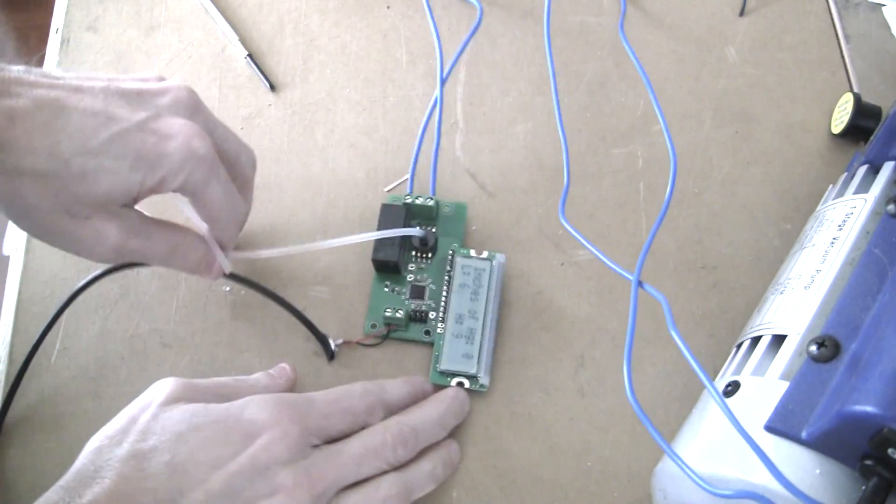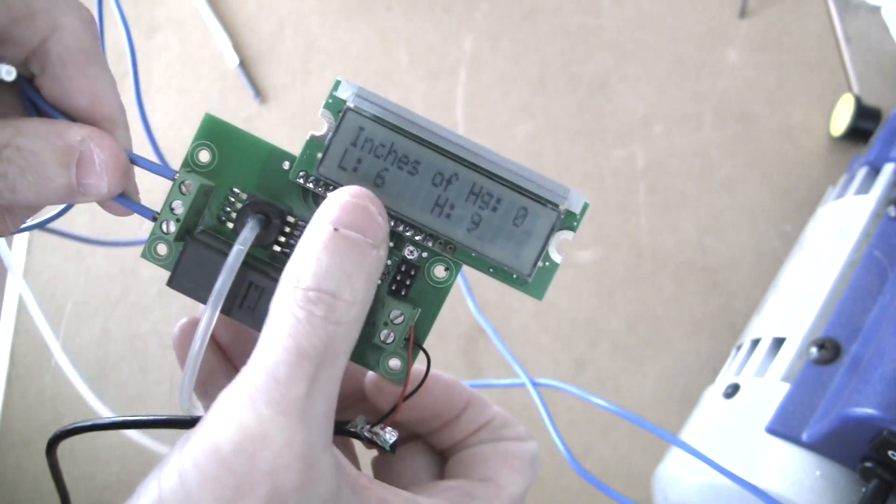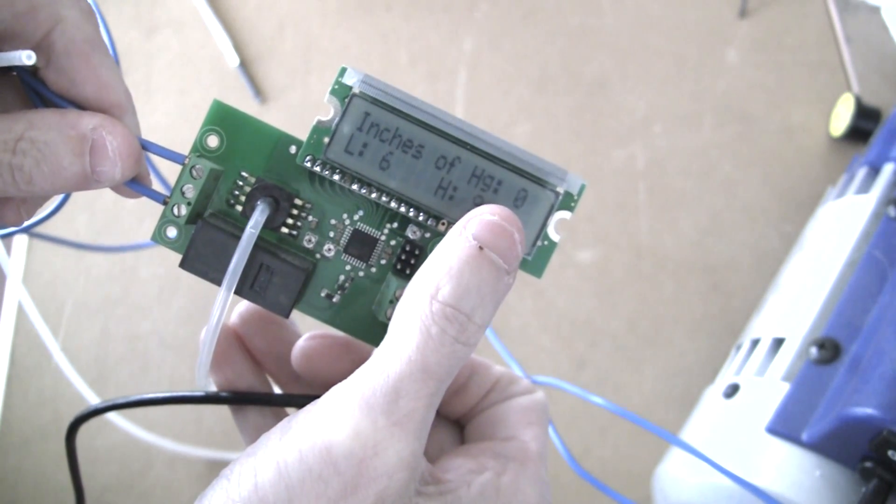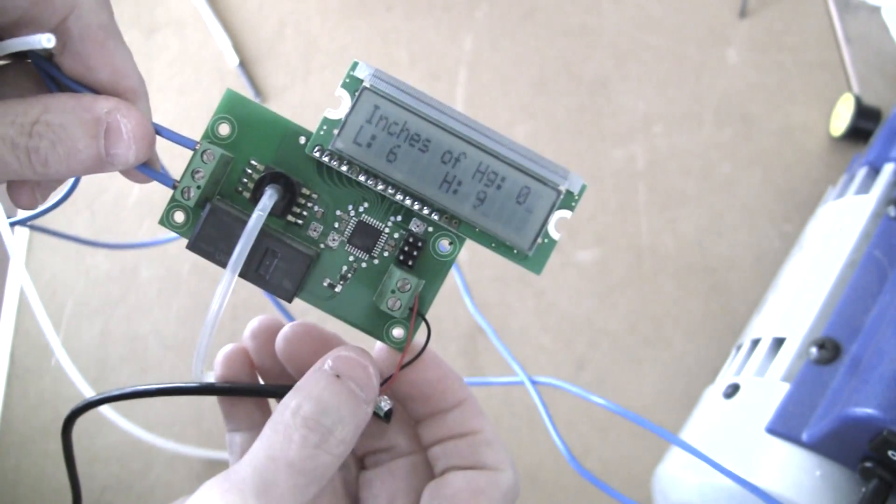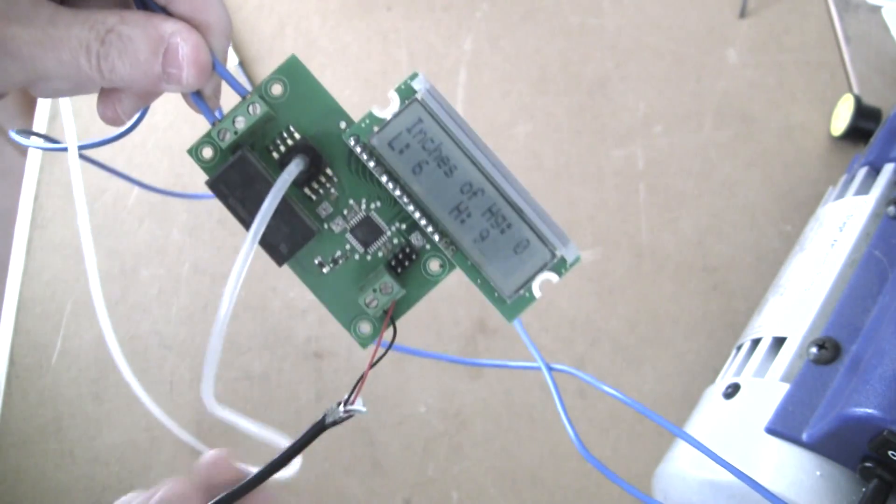So the unit is plugged in. We can see that there is some information here. There's a low and then there's a high, 6 and 9, and then the inches of mercury is zero at this moment, because I'm not drawing out the air here, creating a vacuum.